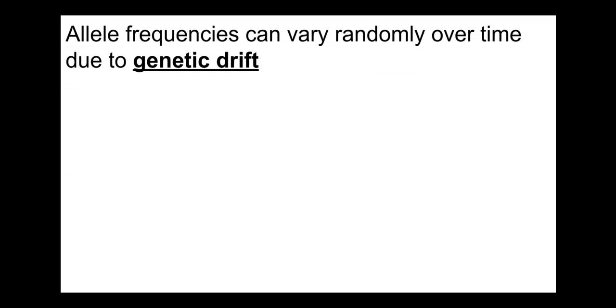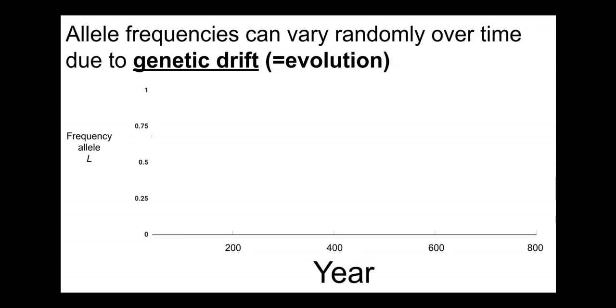Now over time, the frequencies of alleles in a gene pool can vary randomly over time due to genetic drift. And this is evolution, it's just as good a form of evolution as natural selection or any other.